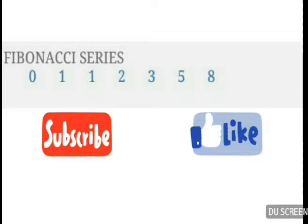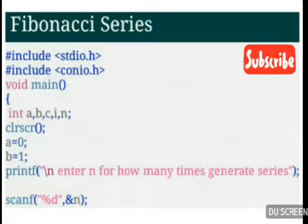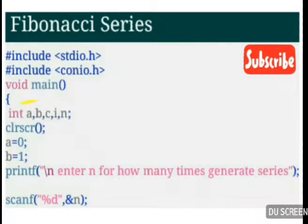According to the algorithm, the program fields look like this. First, we have to include the libraries — I write stdio (standard input output) and conio. The program starts after void main, and everything is displayed inside the void main curly brackets. We declare integer variables: A, B, C, I, and N. Then we write clrscr and declare A equal to 0 and B equal to 1.